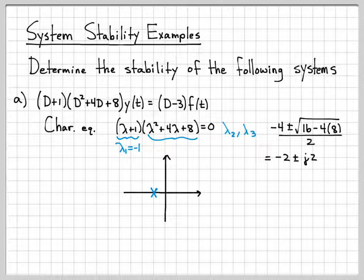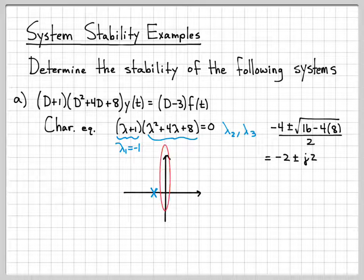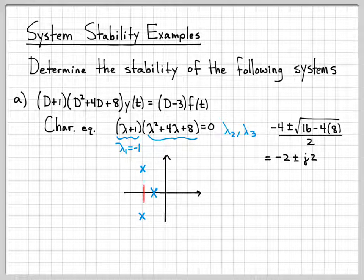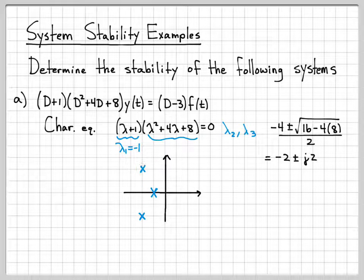Let's think about where these live in the complex plane. So here is my real axis. Here is my imaginary axis. Lambda 1 is negative 1, so it's just on the real axis at minus 1. Lambda 2 and lambda 3 are complex. They are at minus 2, plus or minus j2. So right here at minus 2. And then plus or minus, plus j2, minus j2. So that's where the roots are in the complex plane for this system.